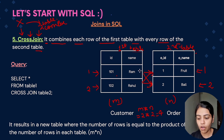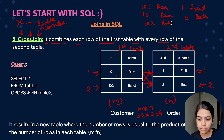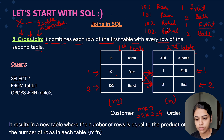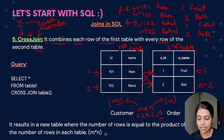Let's verify: the first row of the customer table cross joins with the first and second rows of the order table, giving 101 Ram with one fruit, and 101 Ram with two ball. Then for the second row, 102 Rahul with one fruit, and 102 Rahul with two ball. So the final result has 1, 2, 3, 4 rows. It results in a new table where the number of rows equals m × n.